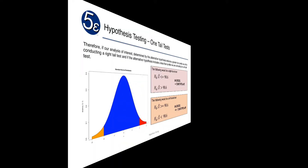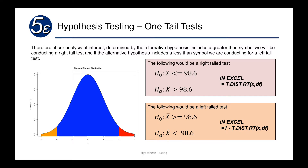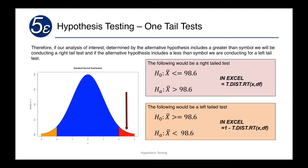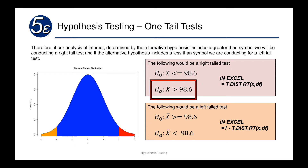In Excel, we only have either the t.dist.2t function or the t.dist.rt function — there is no left-tail function, but we can calculate the left tail by a simple calculation using the rt function. To determine whether we have a right-tail or left-tail test, we look at the alternative hypothesis. If the alternative hypothesis has a greater-than sign, we're going to be focused on the right tail. If we're looking for the probability of the curve greater than 95 percent, we'd be on the right tail; less than five percent means the left tail.